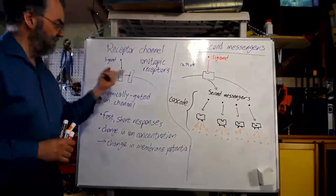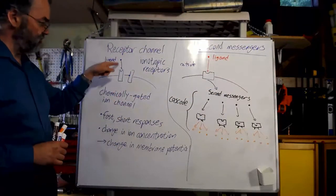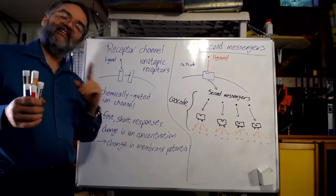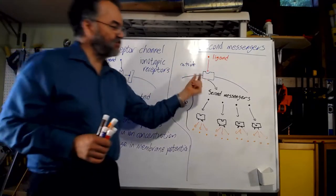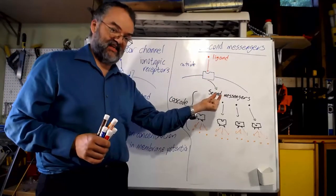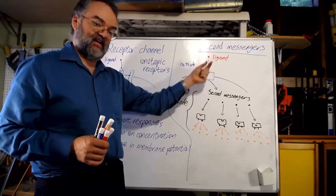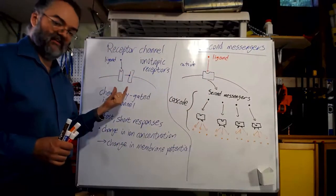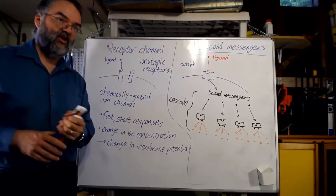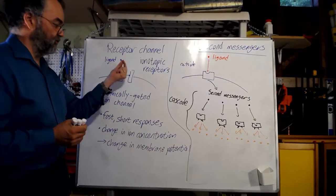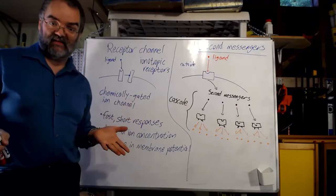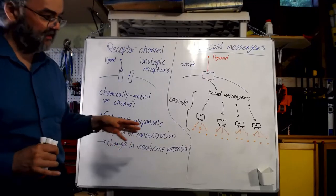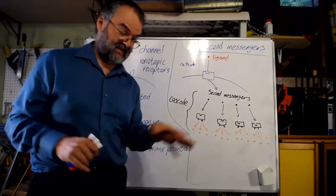Sometimes people ask: isn't the ion in a receptor channel a second messenger too? Not exactly. A second messenger is a new molecule made inside the cell — not something that came from outside, but something new in here. The sodium coming in from a receptor channel is not really a second messenger, although it's not impossible for an ion that comes in to regulate enzymes. We don't think of it as a second messenger, at least not for the purposes of this class.